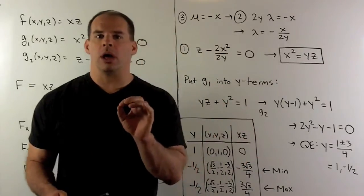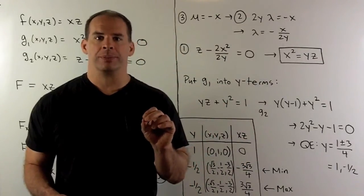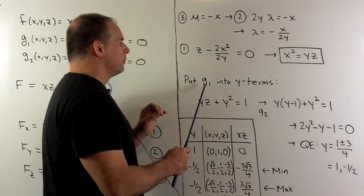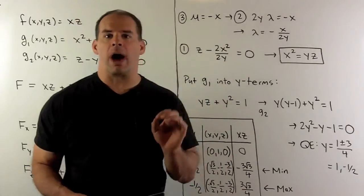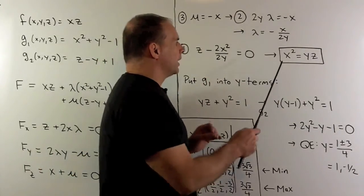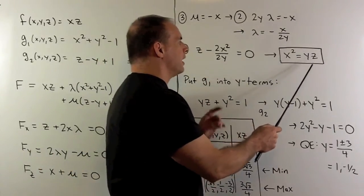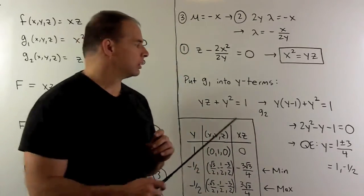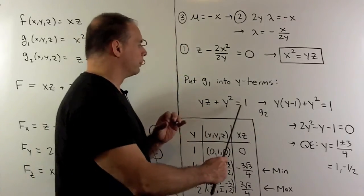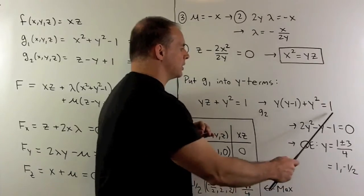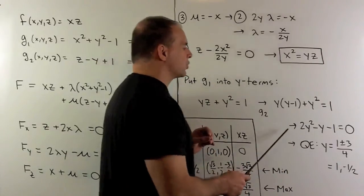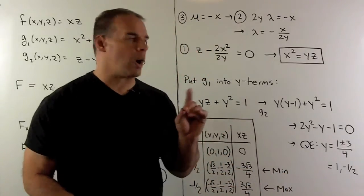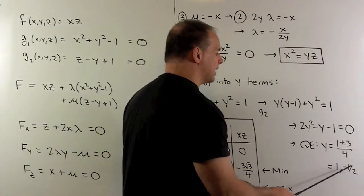Now we want to work on our constraint equations. We focus on g1 and try to put everything in terms of y. I'm going to replace the x² with yz, then we're going to replace the z with y - 1. That's going to give us a quadratic in y, and we solve that using the quadratic equation. We get y equal to 1 and -½.